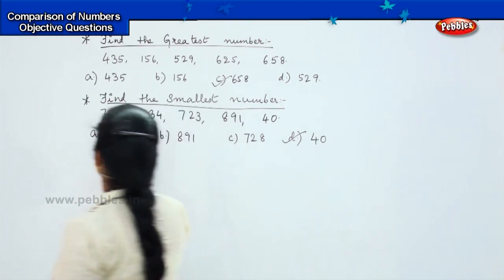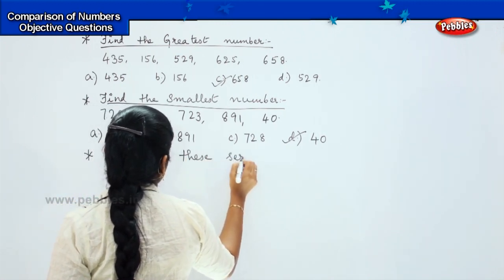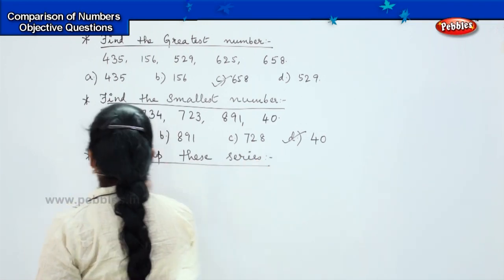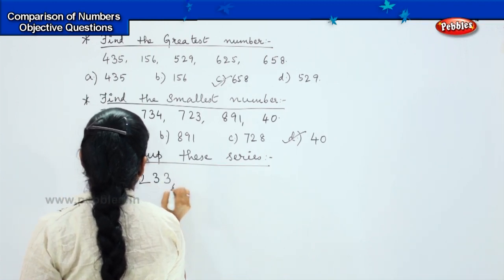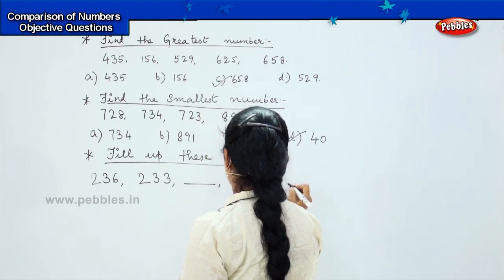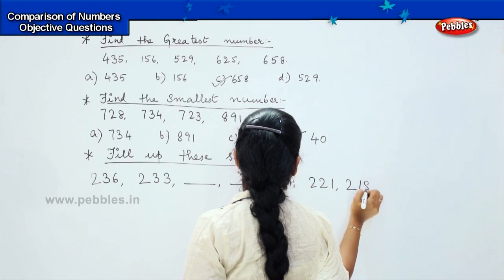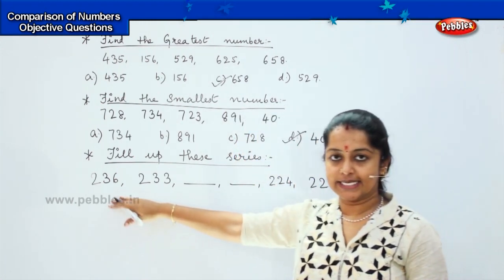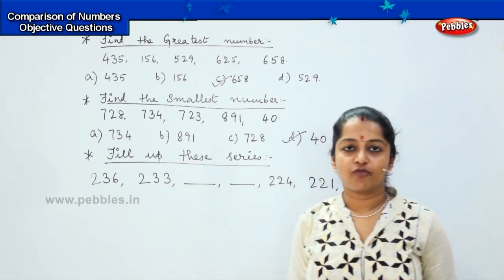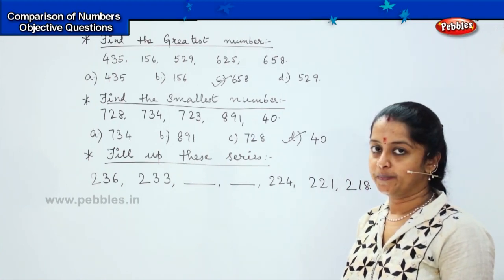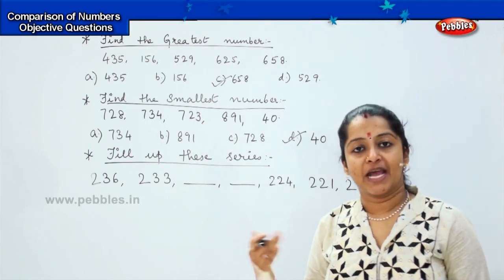Here comes your third question. You have to fill up this series. I am going to give you a series and you need to find out what the series is about, then fill in the number. The given numbers are 236, then 233, then two blanks, then 224, 221, and 218. Can you tell what series is being followed here? Very good. We are following the skip counting of 3 in the backward counting method.